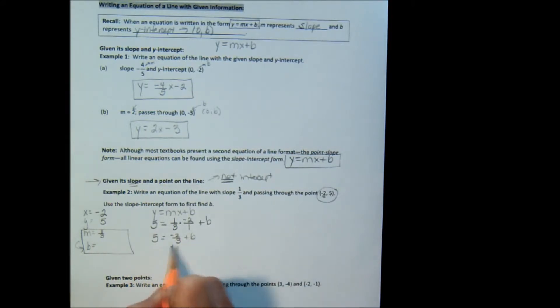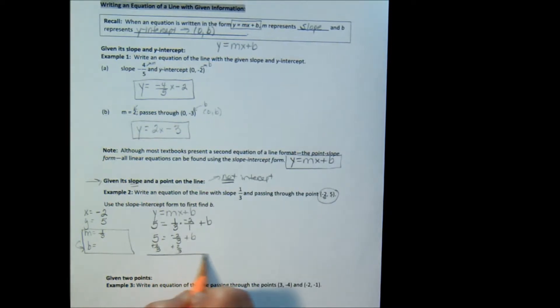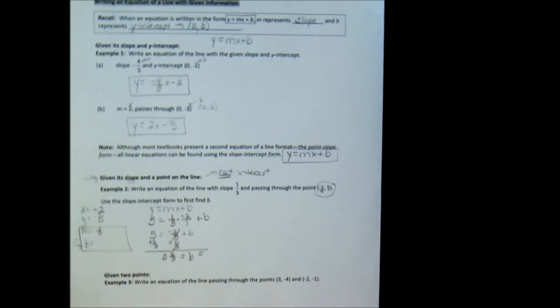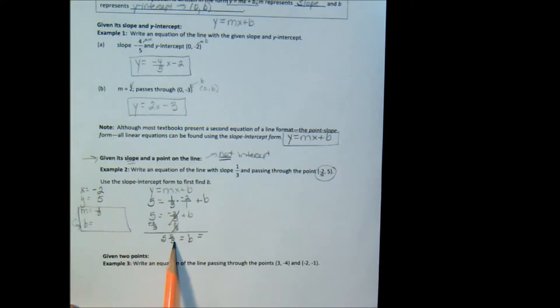That gives me b is equal to 5 plus 2 3rds is 5 and 2 3rds. Now, for slope and for intercept, you typically don't show them as a mixed number. So we want to change this to an improper. 3 times 5 is 15, 16, 17 3rds. So I now know that b is 17 3rds.